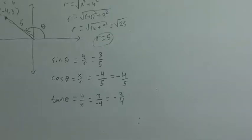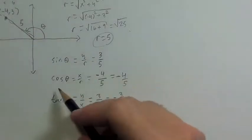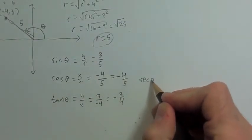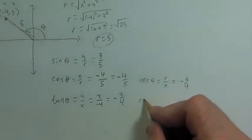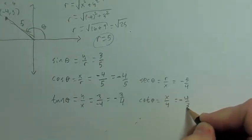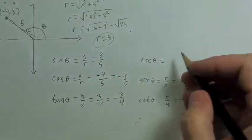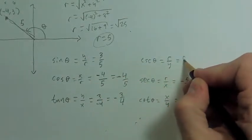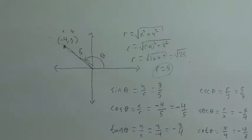We can find our other trig functions too. If cosine is x over r, secant — which is cosine flipped over — will be r over x, so it'll be negative five-fourths. Cotangent is tangent flipped over, so it'll be x over y — negative four-thirds. And cosecant is sine flipped over, so if sine is y over r, cosecant will be r over y, which is five-thirds. So there we go, we found all the trig functions of this angle.